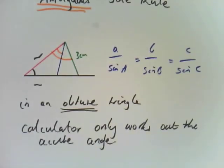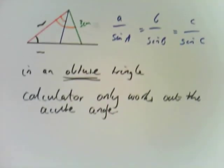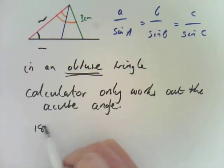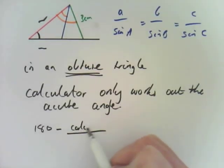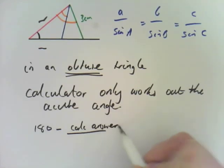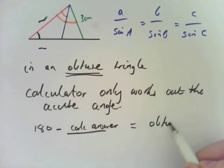So if you're trying to work out the obtuse angle, you need to do 180 minus the calc answer. That equals the obtuse angle.